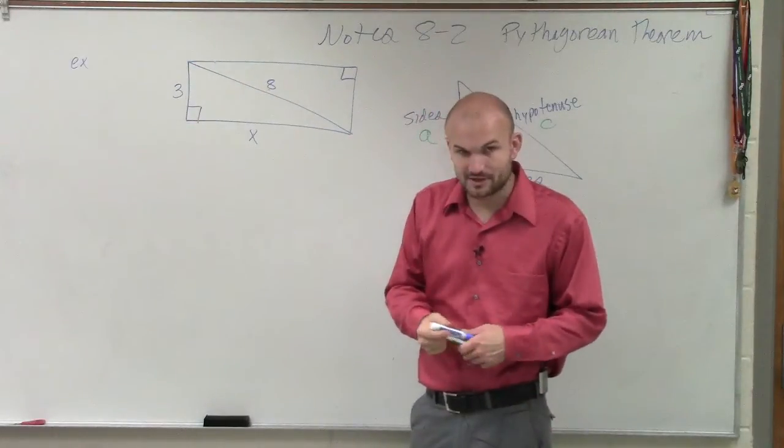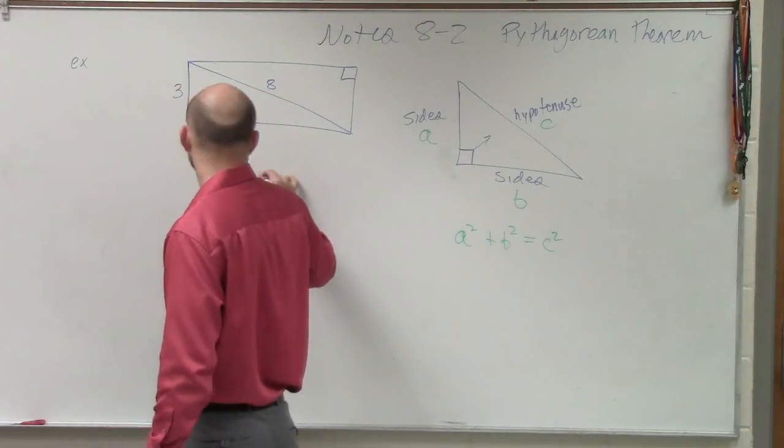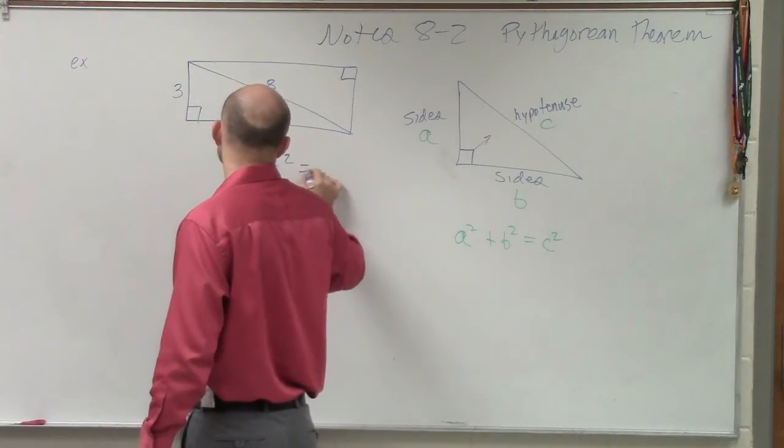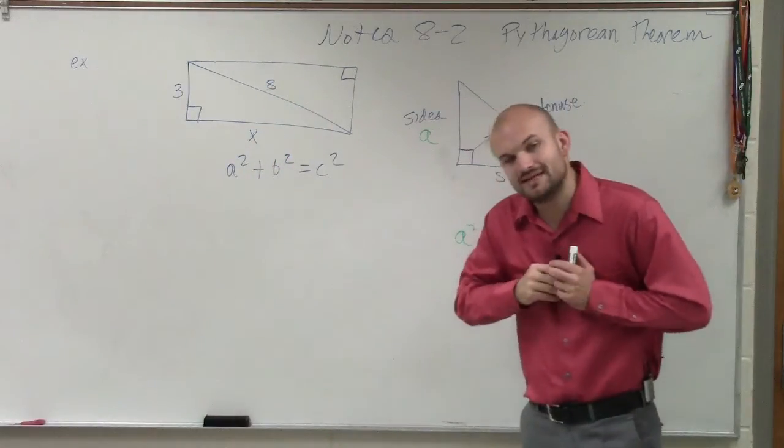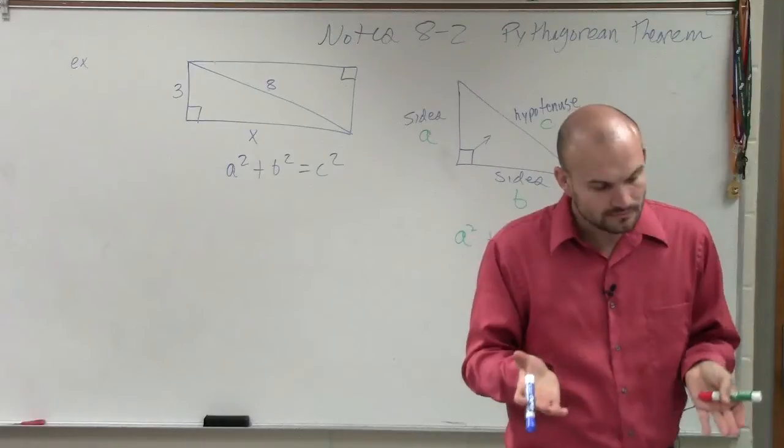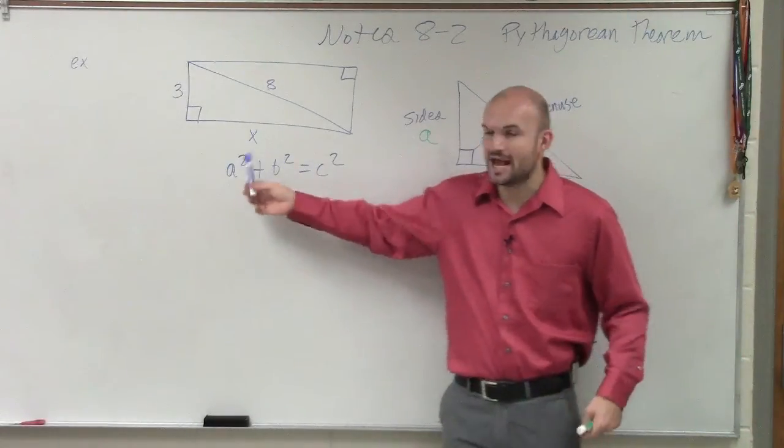Now, by looking at Pythagorean Theorem, we know that the sum of the sides or the square of the sum of the sides equals the hypotenuse squared. So now what we need to do is determine what is our a, b, and our c.